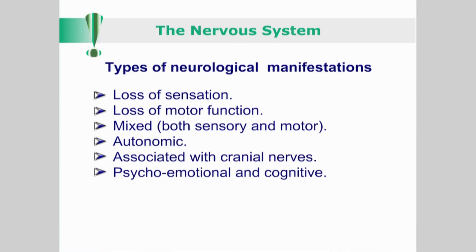A functional disorder like anxiety, leading to hyperventilation, may cause paresthesia and weakness. Yet another way to help you focus your case history inquiry into a suspect neurological presentation is whether you can classify their presenting complaint as loss of sensation, loss of motor function, mixed — that is, both sensory and motor — autonomic like secretomotor effects, associated with cranial nerves, or psycho-emotional or cognitive.